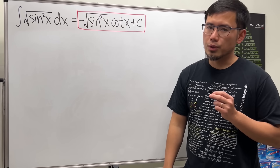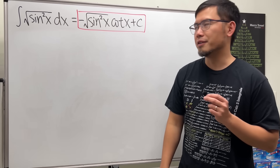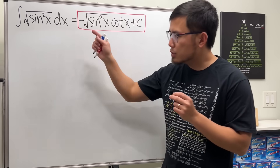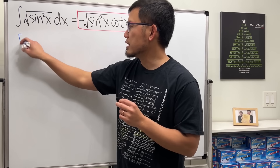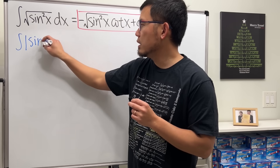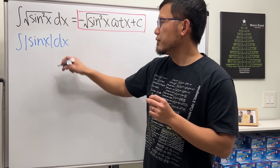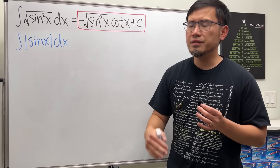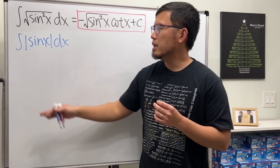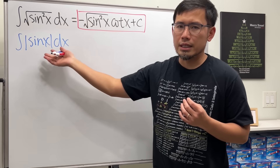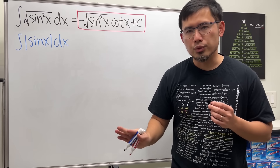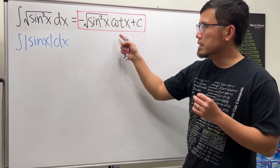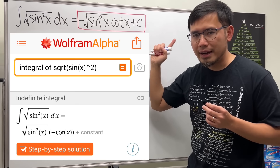Today I have a simple integral that I cannot solve: the integral of square root of sine squared x. This is just the same as the integral of the absolute value of sine x. Of course, we can look at where sine is negative and negate the result piecewise, but I don't want to do that. I really want to end up with the answer I got from Wolfram Alpha.